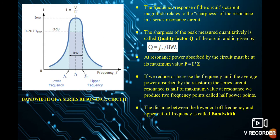Next is the bandwidth of the series resonance circuit. The frequency response of the circuit current magnitude relates to the sharpness of the resonance. The sharpness of the peak measured quantitatively is called the quality factor Q of the circuit, given by Q equals resonance frequency divided by bandwidth. At resonance, the power absorbed by the circuit is at its maximum value P equals I squared into Z. If we reduce or increase the frequency until the average power absorbed by the resistor is half the maximum value at resonance, we produce two frequency points called the half power points — the lower cutoff frequency and the higher cutoff frequency. The distance between them is called the bandwidth.